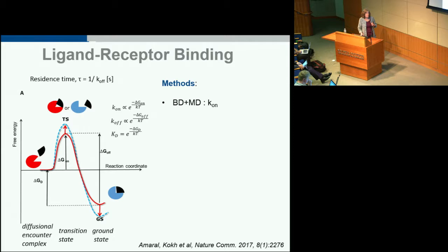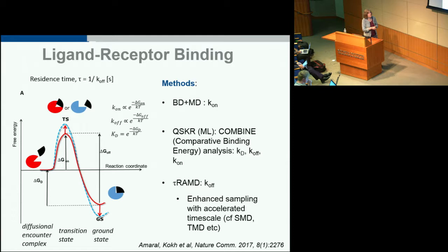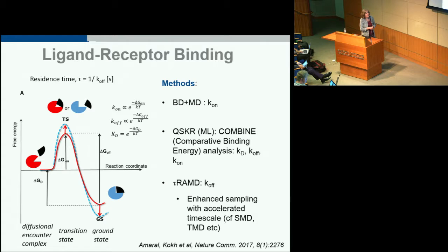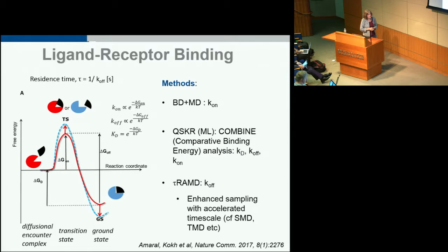We have been developing a few techniques. We're working on combining Brownian and molecular dynamics to compute on-rates, on machine learning or QSKR approaches to estimate relative on-rates and off-rates based on comparative binding energy analysis, and on tau-RAMD — an enhanced sampling procedure where we accelerate the rate of ligand unbinding to give relative residence times. It's similar in spirit to scaled, targeted, or steered molecular dynamics, but the procedure is different, and the aim is a computationally cheap method applicable to lead optimization.